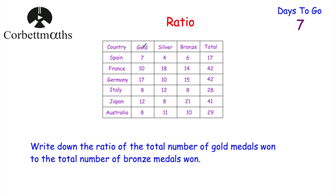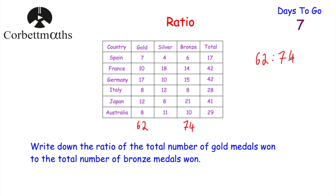So in terms of this question, I'm going to work out the total number of gold medals won and the total number of bronze medals won, then write it as a ratio and simplify if I can. This is a calculator question, so I'm going to add up the numbers in the gold column. We get 62 — so altogether there were 62 gold medals won. Then for the bronze medals, we add up those numbers, and that's equal to 74.